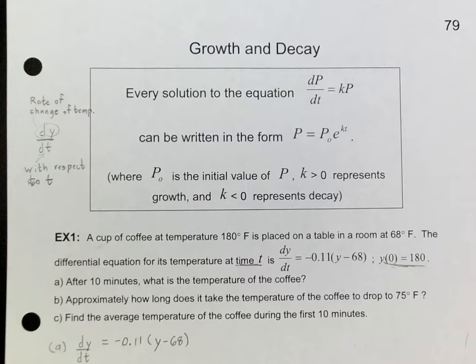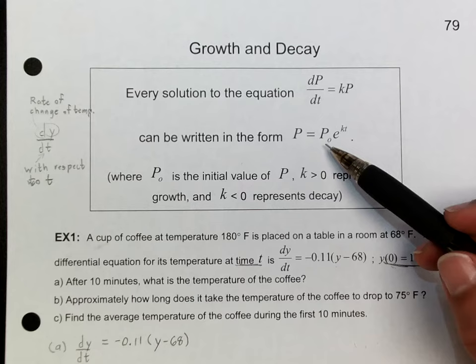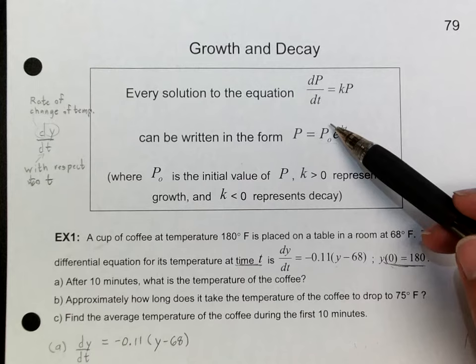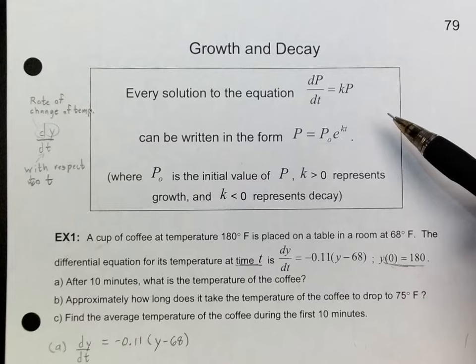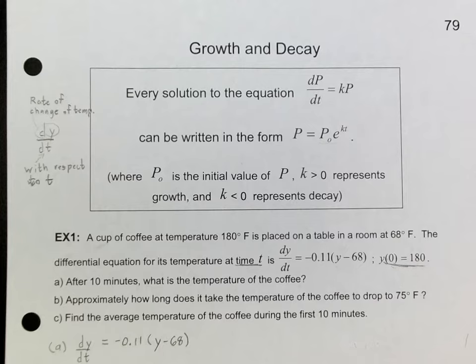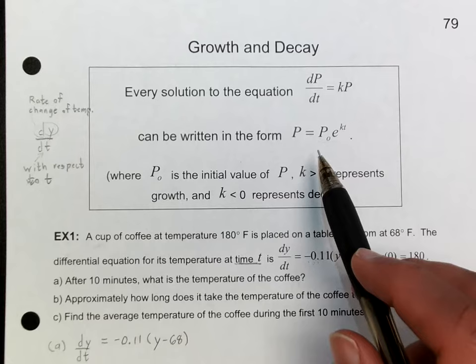This is topic 79: growth and decay. Hopefully you should be able to recognize this function from Algebra 2 or pre-calculus. This is your typical growth or decay function — you have the initial value P(0), K is a constant, and T is time. We're going to see how we go from that familiar form to something very similar.